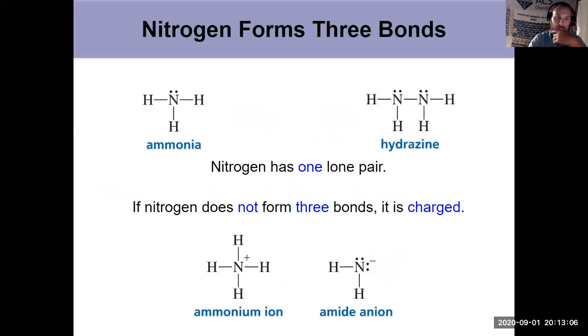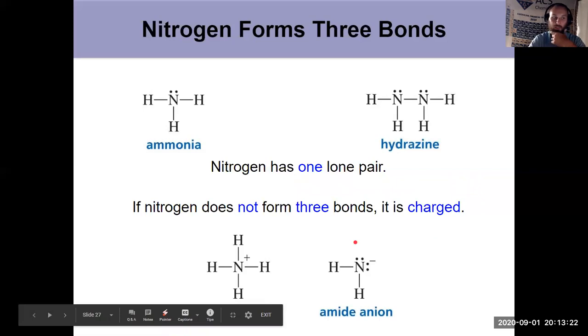What else are we going to work with a lot? We'll see nitrogen pretty frequently. It likes to form three bonds and have one lone pair, because then it has a formal charge of zero. If that's not the case, then you're going to have a formal charge, be it positive or negative. Both of these guys down here have special synthetic utilities. You've seen ammonium already.